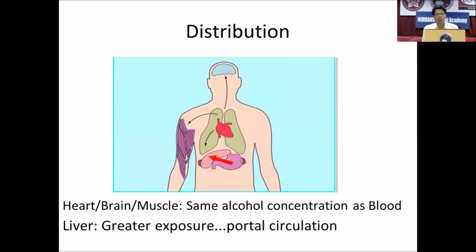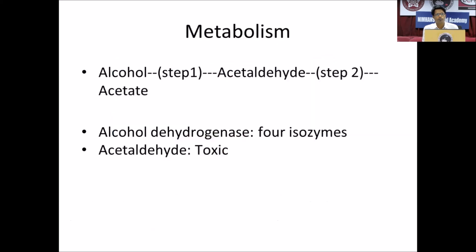Coming to distribution: alcohol distributes in the brain, heart, and muscles because it is water soluble, and it easily crosses the blood-brain barrier. The concentration of alcohol is similar in the heart, brain, and muscles. The liver has greater exposure because alcohol goes directly from the intestines into the liver via portal circulation and undergoes fast metabolism there.